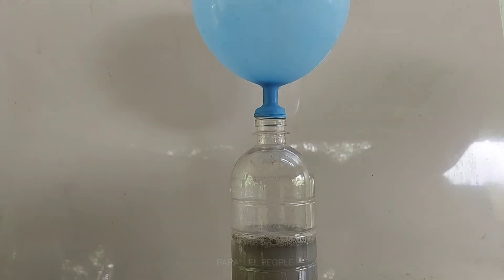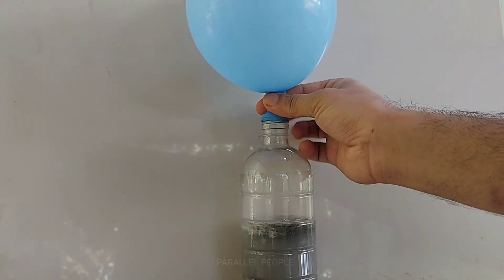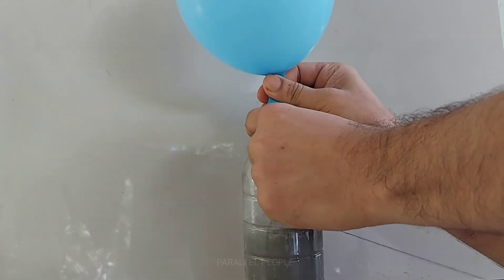You can see here the vigorous reaction between aluminum and sodium hydroxide. Bubbles are forming at a faster rate. Our balloon is filled with hydrogen sufficiently enough for getting a lift, so we can remove it and tie it with a string.